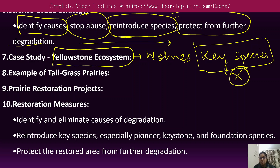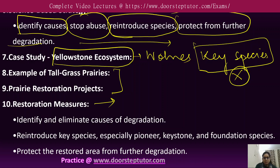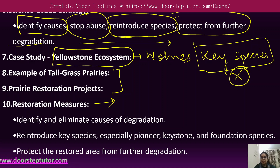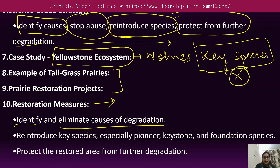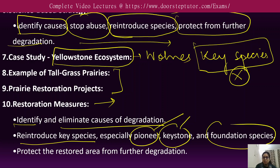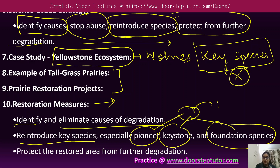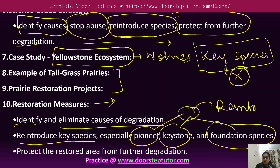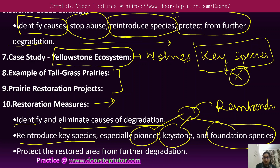Restoration measures basically include the identification and elimination of causes, then reproduction of key species — especially the pioneer, keystone, and foundation species. These three different types of species need to be reintroduced for ecological restoration.